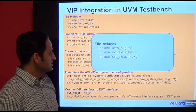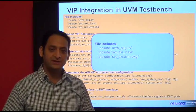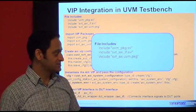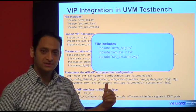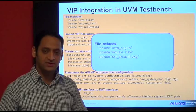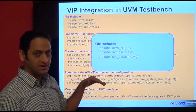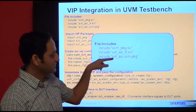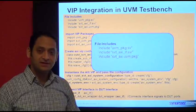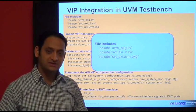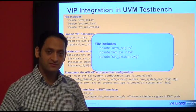The first step is to include VIP specific files and packages in your testbench, as shown here. First is the UVM package — if you already have it somewhere in the testbench you can skip that part. Next is the AXI interface file, and then the SVT base class package and the UVM specific package of the VIP.